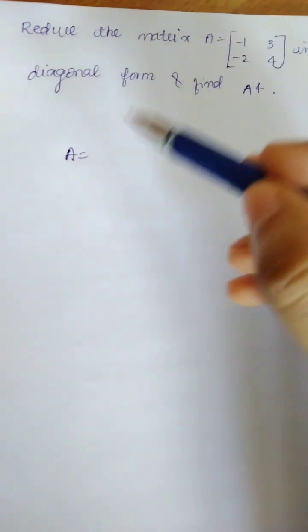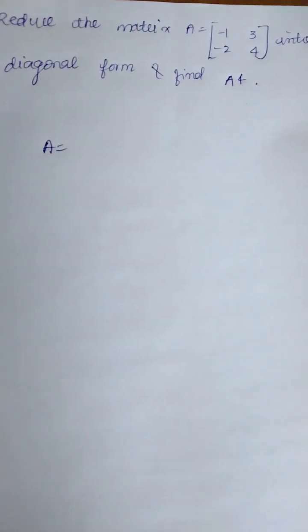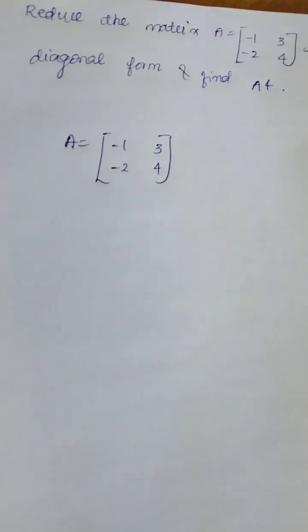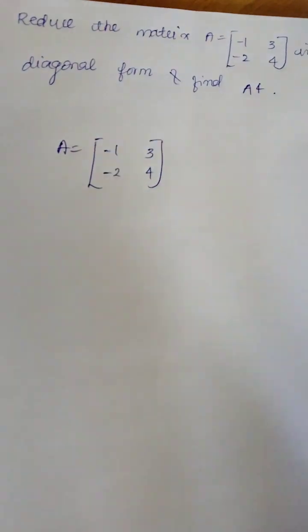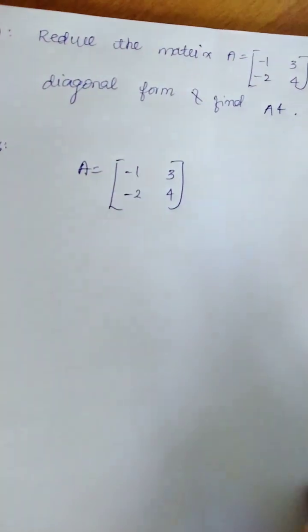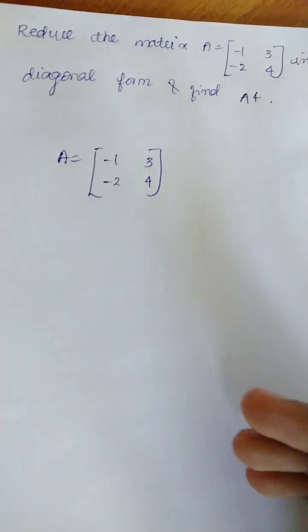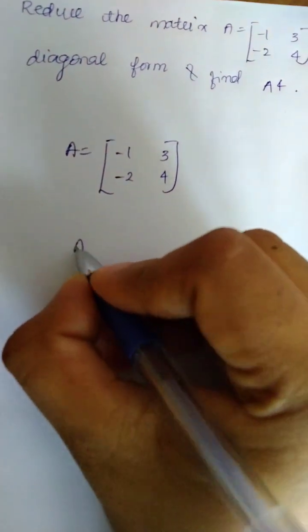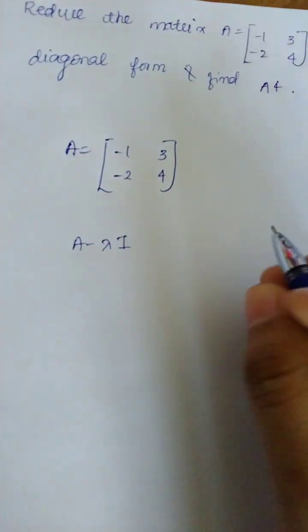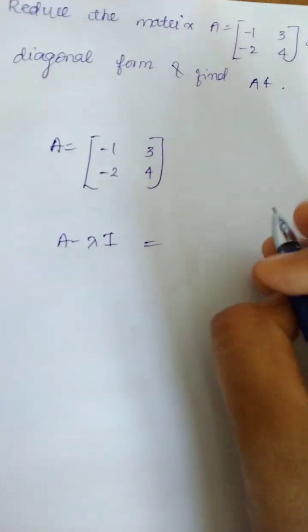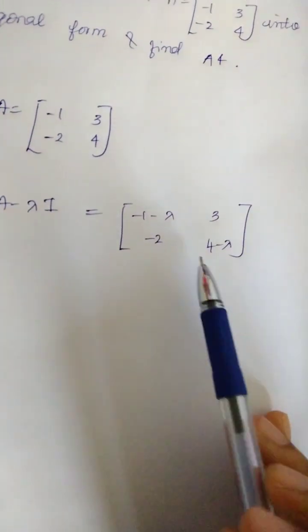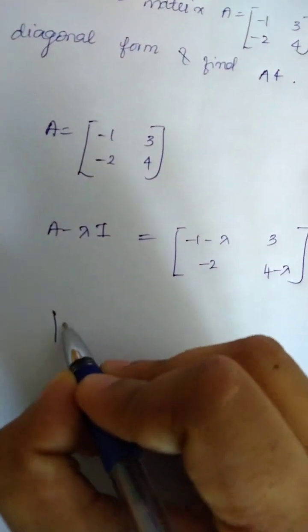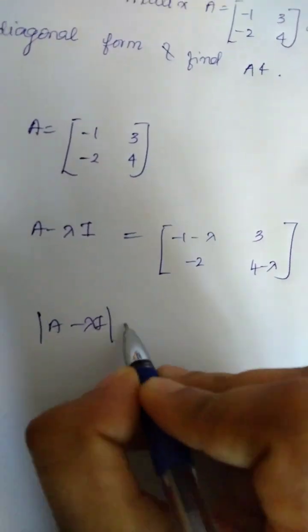First, we will use the eigenvalues. Now we have to do diagonalization. We have to explain these steps. We have to do A minus lambda I. That is, we compute A minus lambda I.